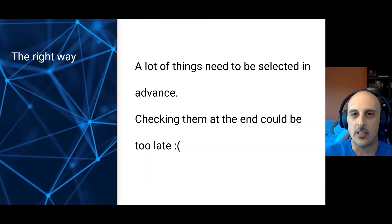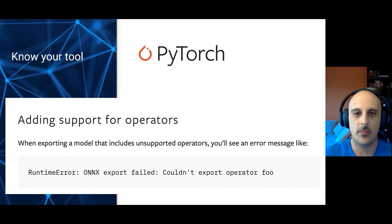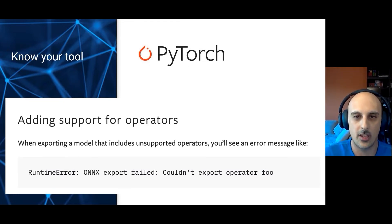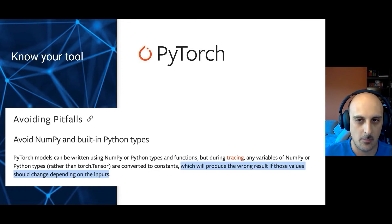The key is to start in advance to check what we want to use and the architecture we want to create in our models, to avoid terrible mistakes at the end. For example, in the case of PyTorch, if I want to export my model to ONNX and I receive an error, it's easy to check. If my model is just in training or in production, it's a nightmare because I have to retrain everything and make changes.